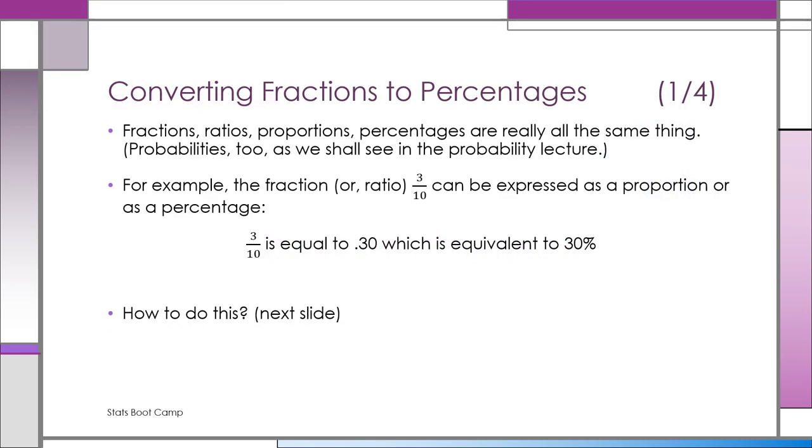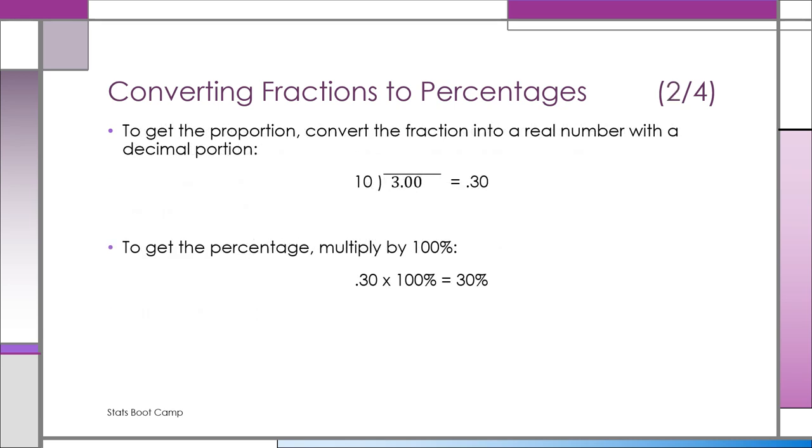In this slide, you see that the fraction 3 tenths is the same as 0.3, 0.30, and also 30%. To get 3 tenths, just divide 10 into 3, and that equals 0.30. That's how you get a fraction into a decimal.